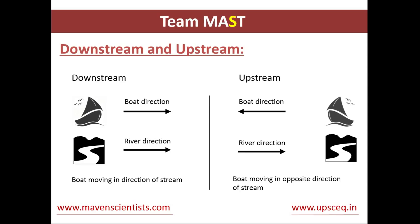First of all let us understand what we mean by downstream and upstream. If the boat is moving in the direction of the stream then we call it downstream. But if the boat is moving in the opposite direction of the stream we call it upstream. In the downstream the speed of the boat increases because the river is also flowing in the same direction and both the speeds add up. But in the upstream the speed of the boat decreases because the direction of the river is different.